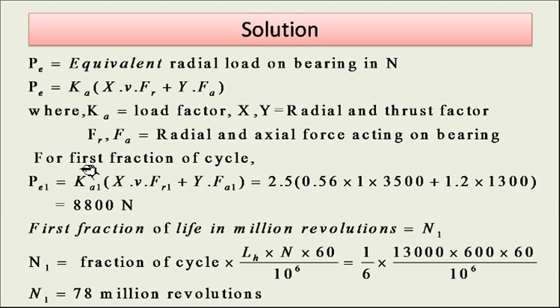For first fraction of cycle, Pe1 equals: Ka1 is 2.5, X equals 0.56, rotation factor is 1, Fr1 is 3500, Y factor is 1.2, and Fa1 is 1300 newton. We will be getting this value as 8800 newton.